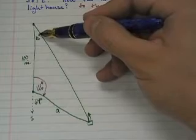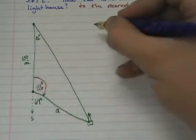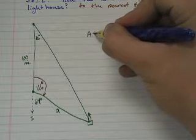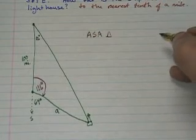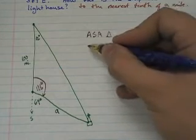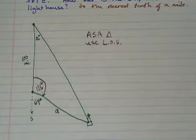So now, I know this angle. I know this angle. And I know the side between them. What do we have? We have an angle, side, angle triangle. And for an angle, side, angle triangle, we should use the law of sines.